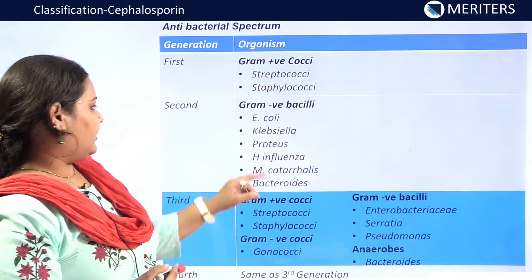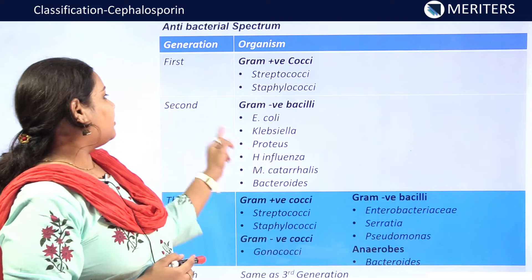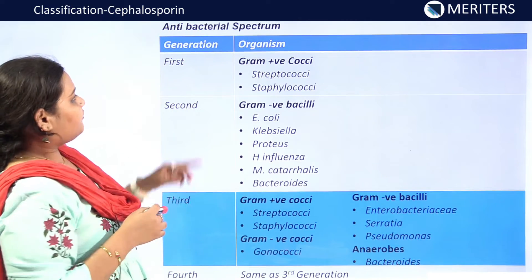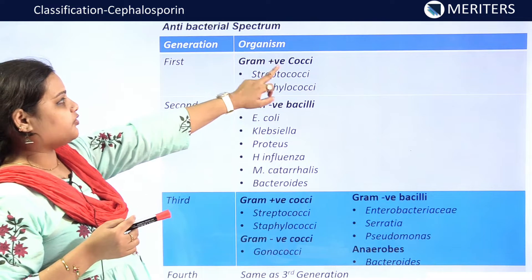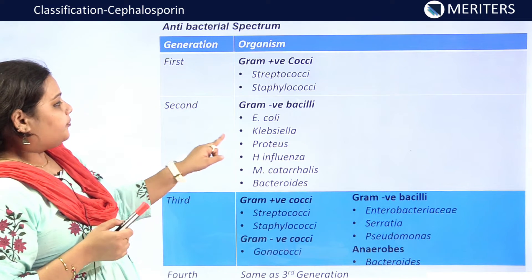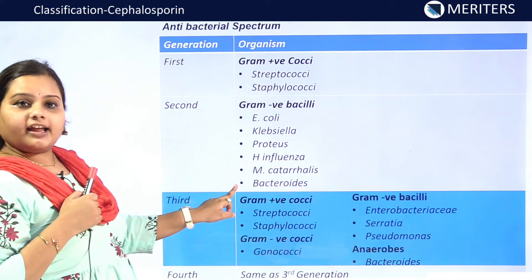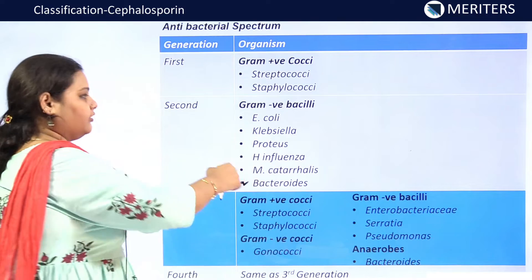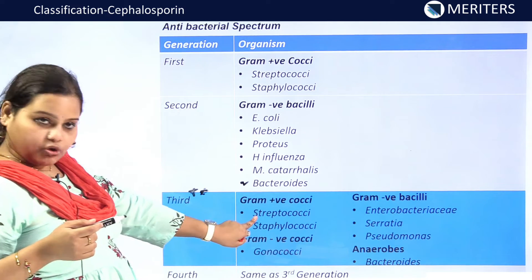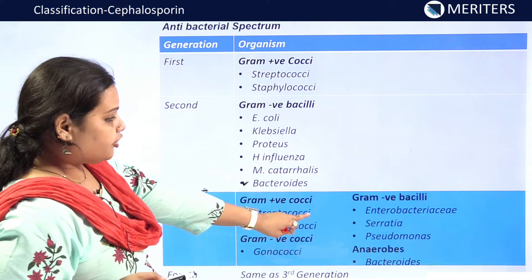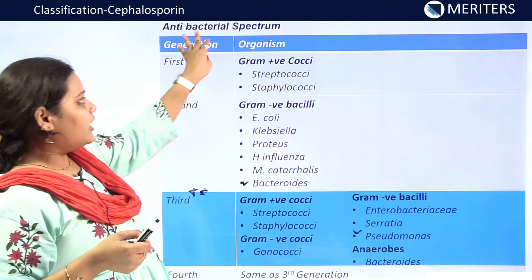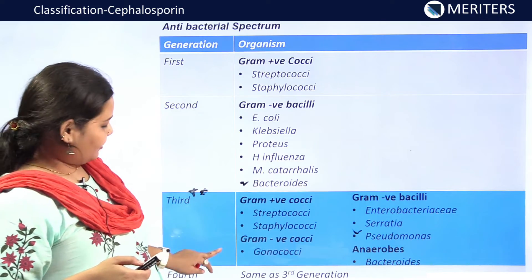The antibacterial spectrum is important for exams — you may be asked which drug to give for a specific organism or disease. First generation covers gram-positive cocci — streptococci and staphylococci. Second generation covers gram-negative bacilli: Klebsiella, Proteus, H. influenzae, Moraxella catarrhalis, and Bacteroides. Third generation covers everything: gram-positive cocci, gram-negative bacilli including Enterobacteriaceae and Pseudomonas, gram-negative cocci like Neisseria gonorrhoeae, and anaerobes like Bacteroides. Fourth generation has the same spectrum as third generation.